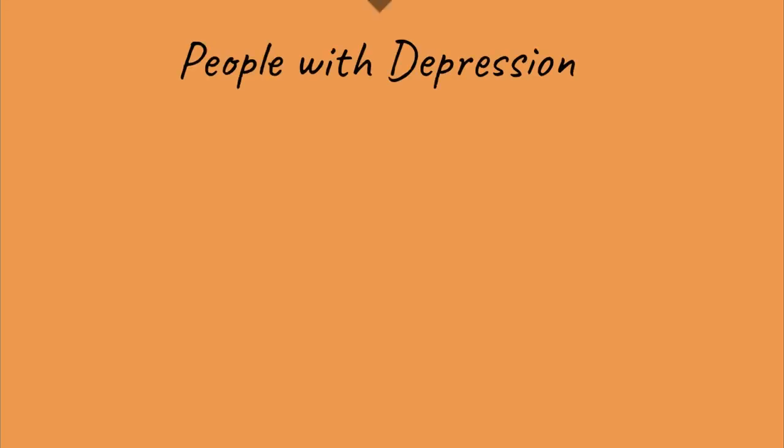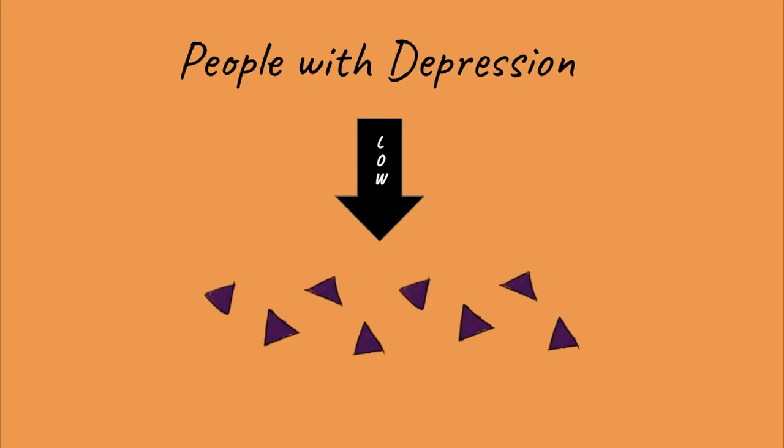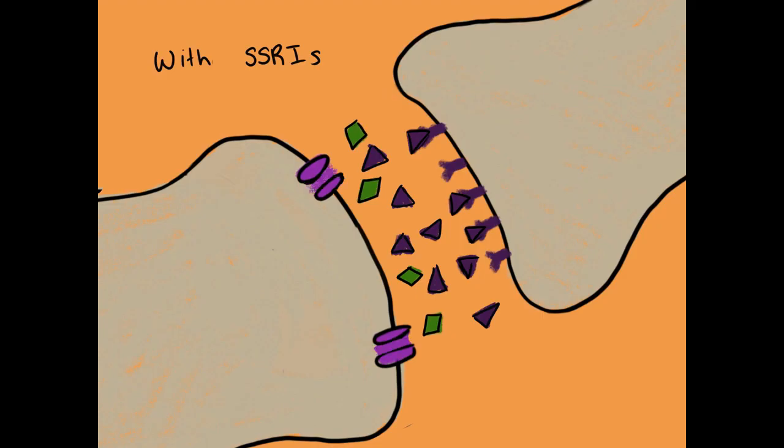Patients with depression have relatively low amounts of serotonin. SSRIs help increase serotonin levels by targeting serotonin reabsorption. But how does it work?